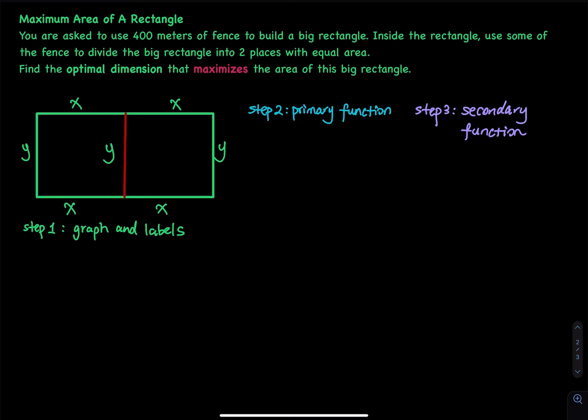I already labeled the graph for you. I have a big rectangle, and I call the length x, and the width is equal to y. I want you to find the optimal dimension — what is x, and what is y — that maximizes the area of this big rectangle. You have some material: 400 meters of fence. You have to build the rectangle and use some fence to make a divider in the middle that cuts it into two places with equal area.